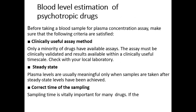Blood level estimation of psychotropic drugs. Before taking a blood sample for plasma concentration assay, make sure that the following criteria are satisfied. First, a clinically useful assay method — only a minority of drugs have an available assay. The assay must be clinically validated and results available within a clinically useful timescale. Checking with the local laboratory is beneficial for both patient and doctor.